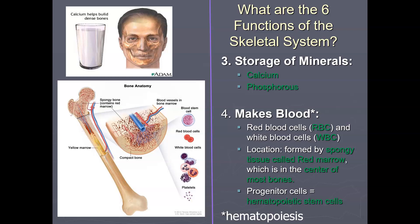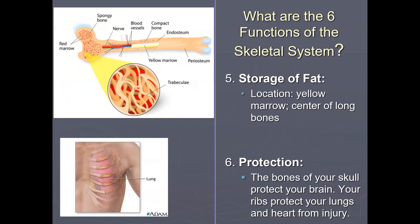In your notes, you should have a diagram to label. Circle the area and label it spongy bone marrow — that's red marrow — and note that it's the location where RBCs, WBCs, and platelets are made. The skeletal system also has a function of storing fat, which occurs in the yellow marrow in the center of the long bones. On your diagram, draw it in and label the yellow marrow as the site of fat storage in the bones.